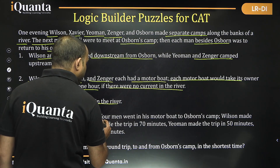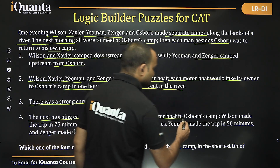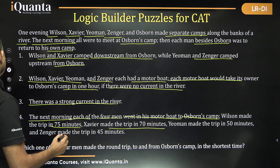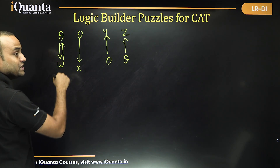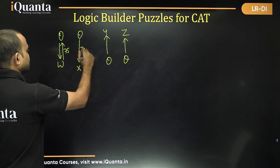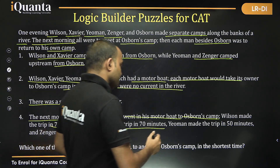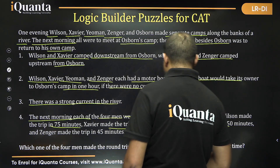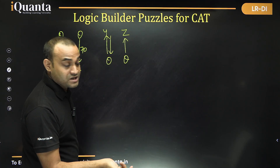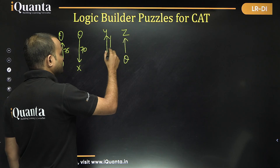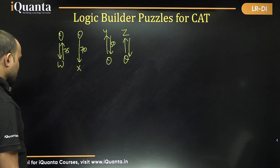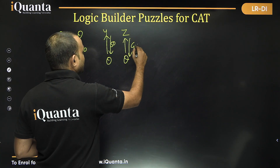The next morning, each of the four men went by motorboat to Osborne's camp. Wilson made the trip in 75 minutes, Xavier in 70 minutes. Wilson and Xavier are going upstream to Osborne. Yeoman made the trip in 50 minutes and Zenger in 45 minutes — both going downstream since they reside upstream.